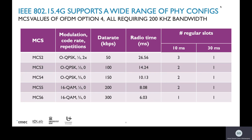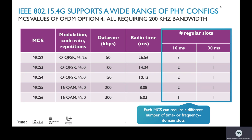If you map this into a TSCH schedule with time slots of 10 milliseconds, for MCS2 you actually need to bond 3 different slots of 10 ms together, while for MCS2 with 30 ms slots you only need one slot. For MCS6 at the bottom of the table, the radio time is only 6 ms, so one 10 ms slot suffices. However, with 30 ms slots you waste a lot of airtime in the schedule, whereas with 10 ms slots you bond together only as many slots as needed.